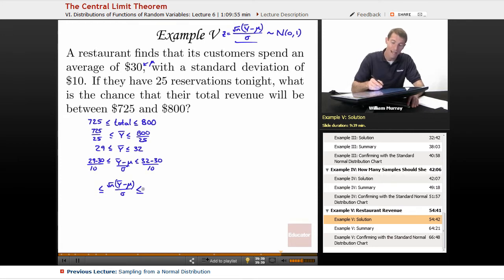So, the square root of n, oh, n is 25, that's the number of customers we're going to be working with tonight. So the square root of n is 5, 5 times 29 minus 30 over 10, and 5 times 32 minus 30 over 10.